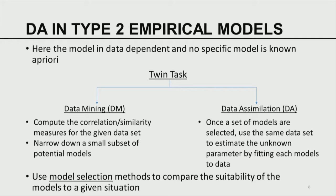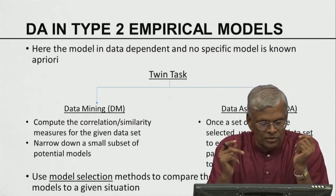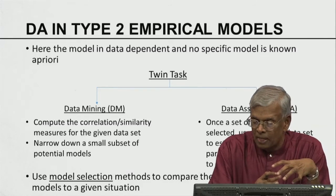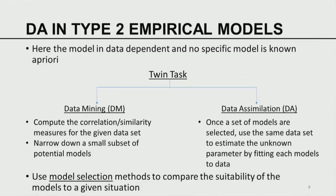Now I would like to talk about how data simulation takes place in empirical models. In an empirical model there is nothing — we do not have physics. All that we have is a bunch of data. So we have a twin task: one is to build the model, and then once we have a general understanding of the class of models we can use, we do data simulation on these models using the data. The data mining part is the process by which we understand the structure that underlies the creation of the data. We compute the correlations and similarity measures in a given dataset. Based on the correlation, we can narrow down a potential class of models to a small subset.